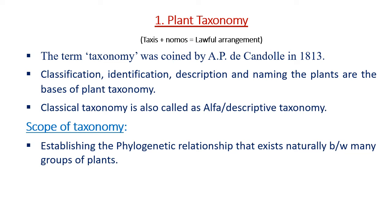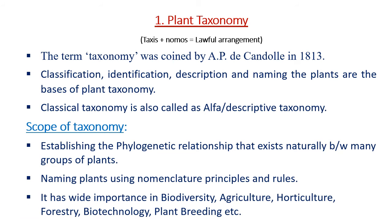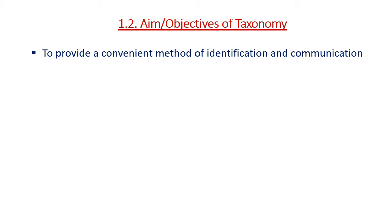Taxonomy involves naming plants using nomenclature principles and rules of ICN. It has wide importance in the fields of biodiversity, agriculture, horticulture, forestry, biotechnology, and plant breeding. The aims of taxonomy: the first one is to provide a convenient method of identification and communication.